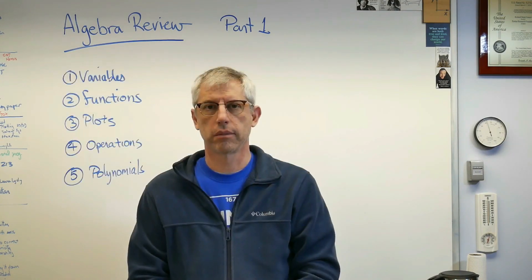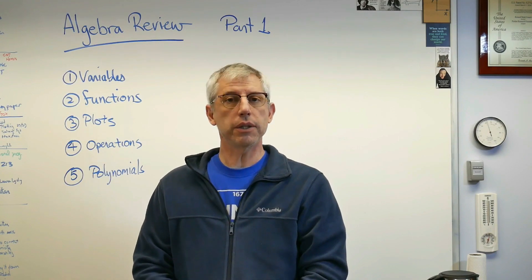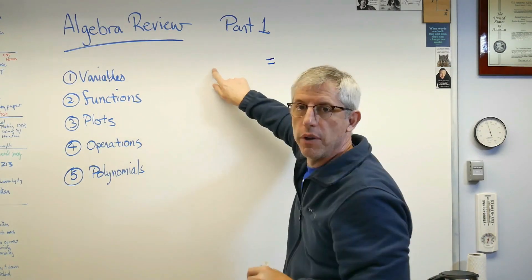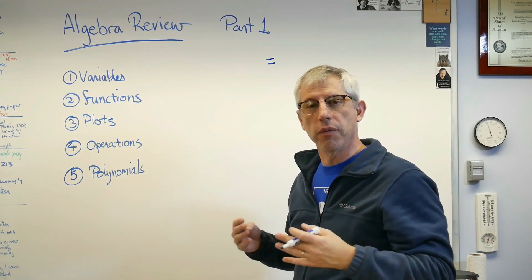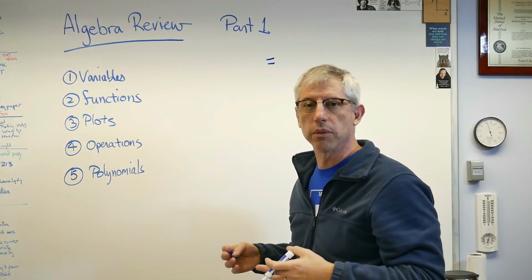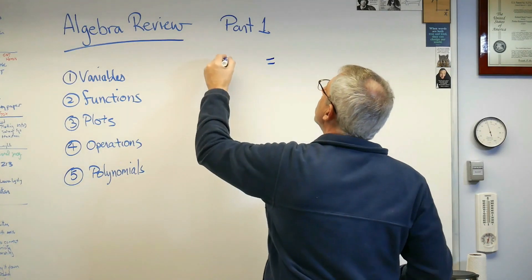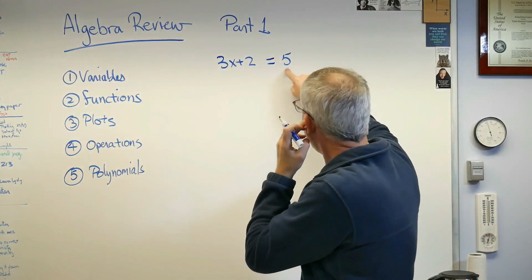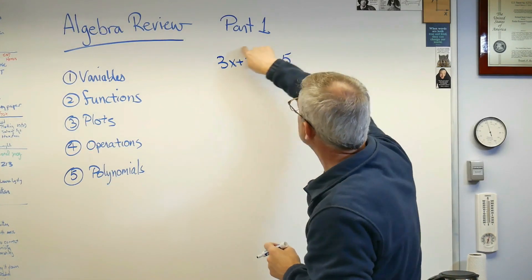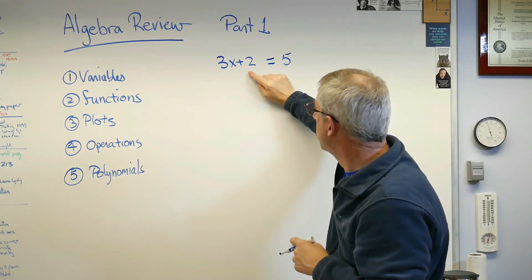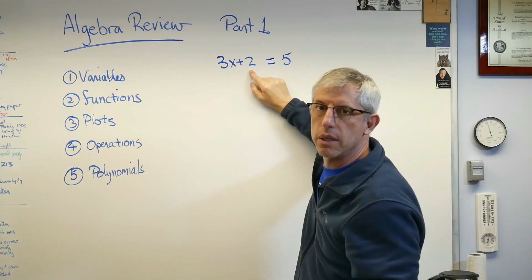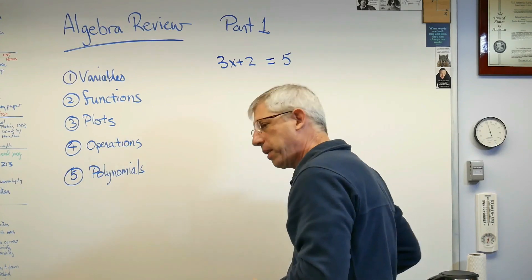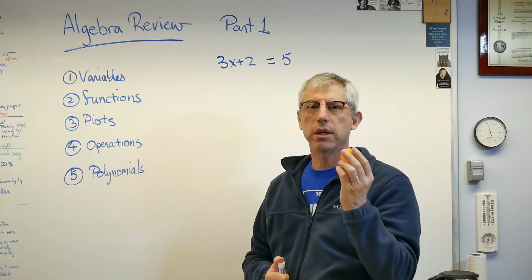Let's start with variables. An algebraic expression has an equal sign in it — some stuff on the left side, some stuff on the right side — and the big idea is that both sides have to be equal to one another. If I say 3x plus 2 equals 5, that means this stuff has to equal 5. This kind of expression shows up in finance, engineering, science, and all kinds of places.